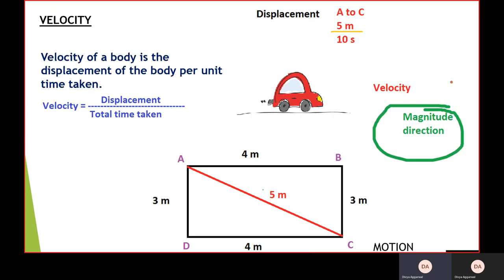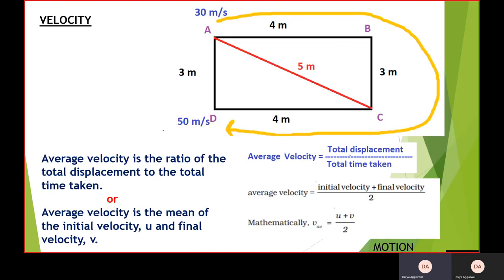Next, I have velocity. So for A to C, as I told you earlier, the displacement is 5 meters, and the time taken was 10 seconds. So I'll get my velocity as 0.5 meter per second. It has both magnitude as well as the direction, and is defined as the displacement of the body per unit time taken. Mathematically, it is given as velocity equals displacement upon total time taken.